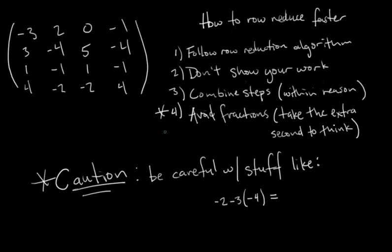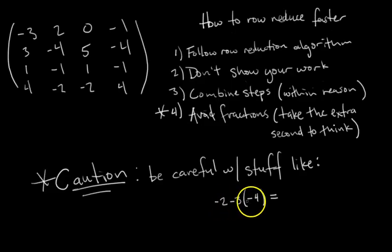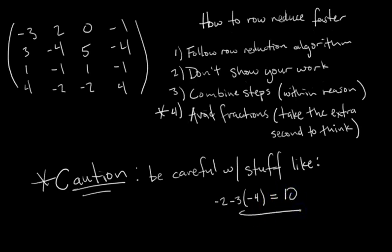One other thing I want to mention about row reduction: be very careful when you're doing row replacement and you have to do arithmetic like negative 2 minus 3 times negative 4. Students always get this wrong and say negative 2 minus 12 is negative 14. Then they do the rest of the row reduction and their final matrix is completely wrong. The correct answer is negative 2 minus 3 times negative 4, which is negative 2 plus 12, which is 10. That's the most common silly mistake students make when row reducing.